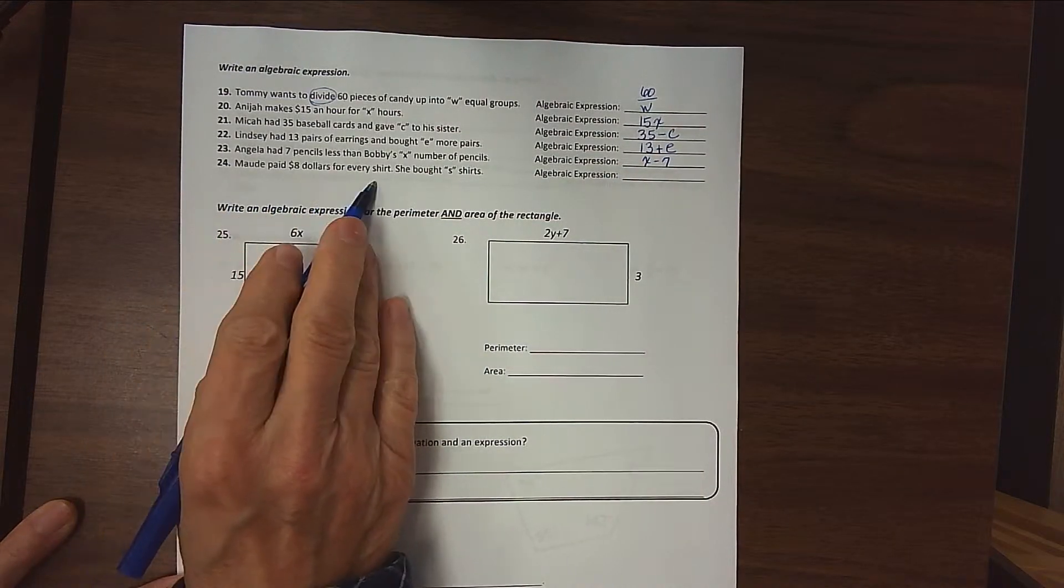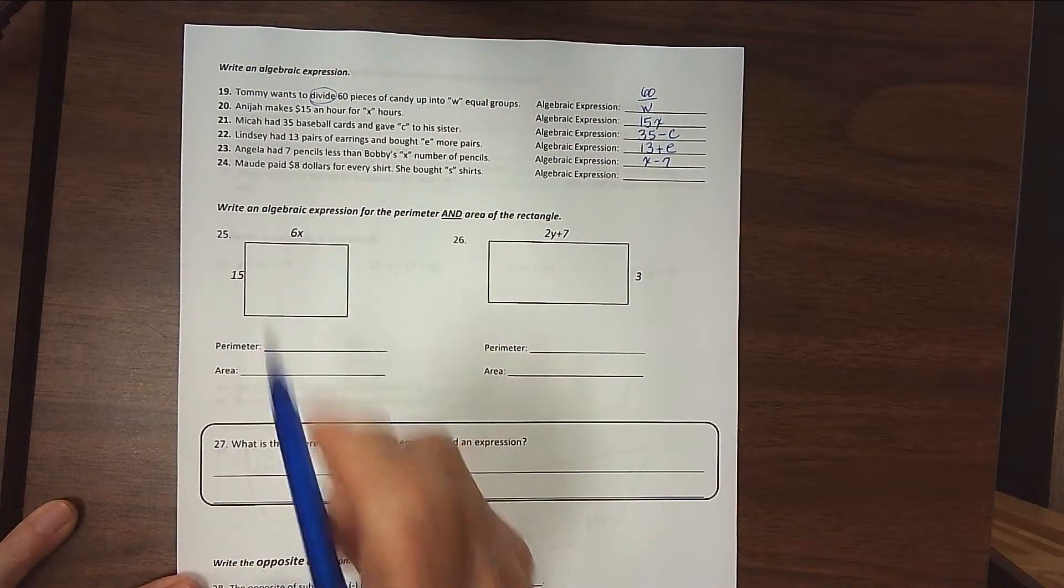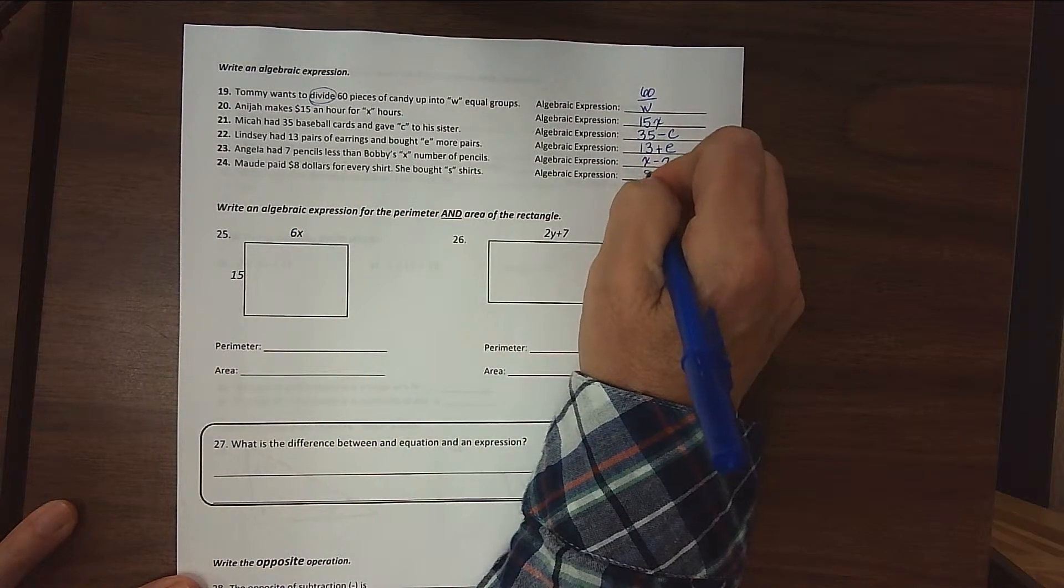Maude paid $8 for every shirt. She bought S shirts. $8 for each shirt means we take 8 and multiply it by S.